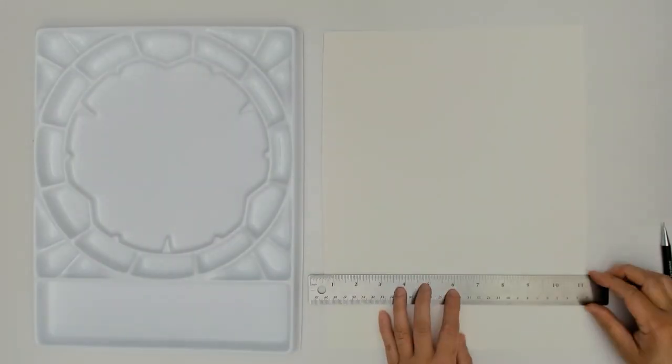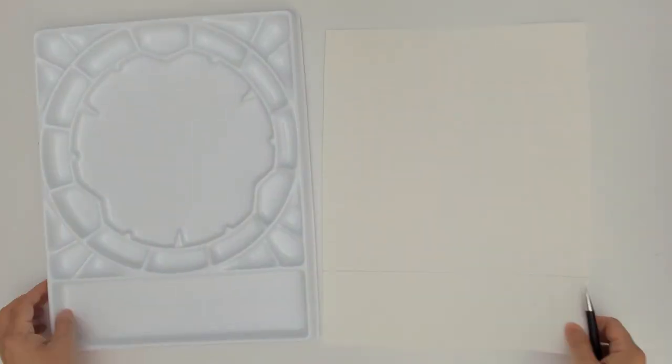Whenever I set up a palette, I always like to do a color swatch. For this color swatch, I'm using watercolor paper, a pencil, and a ruler. I've listed everything I'm using in the description below.